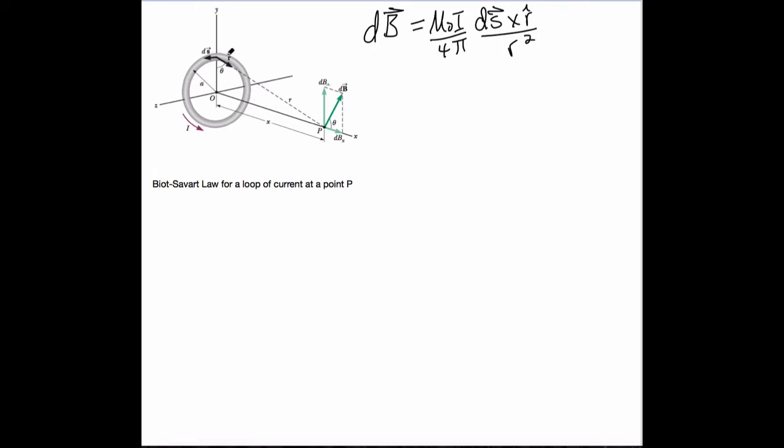So the current is flowing in the direction you see there with the arrow. The differential displacement along the direction the current is moving is called DS. This time we're not going to call it DX. DX is actually at a right angle to that.